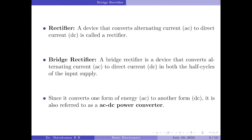Let us start the discussion with the definition for a rectifier. A rectifier is a device that converts alternating current, i.e. AC, to direct current, i.e. DC. A bridge rectifier is a device that converts alternating current to direct current in both the positive as well as the negative half cycles of the input supply.